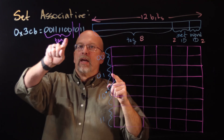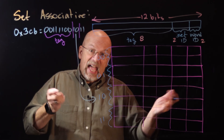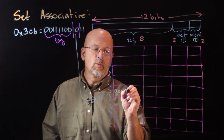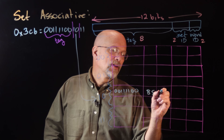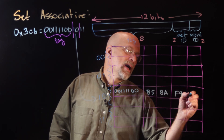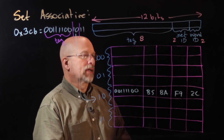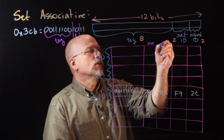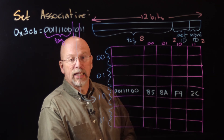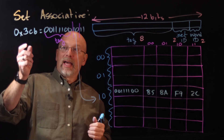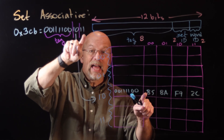Let's say the processor requests to retrieve data at address 3CB. Converting to binary: 0011 1100 1011. Dividing this up, we get the word ID bits, set ID bits, and the tag. This identifies set 10. Since both lines are empty, we pick the first one and store the eight-bit tag 00111110 along with the data block, say F9 2C. The word ID gives an offset, so this address corresponds to the byte 2C.